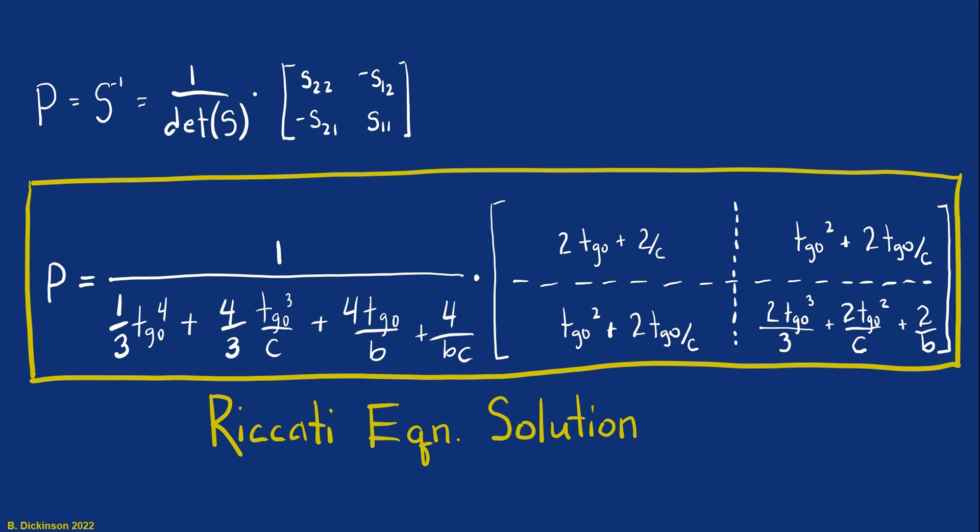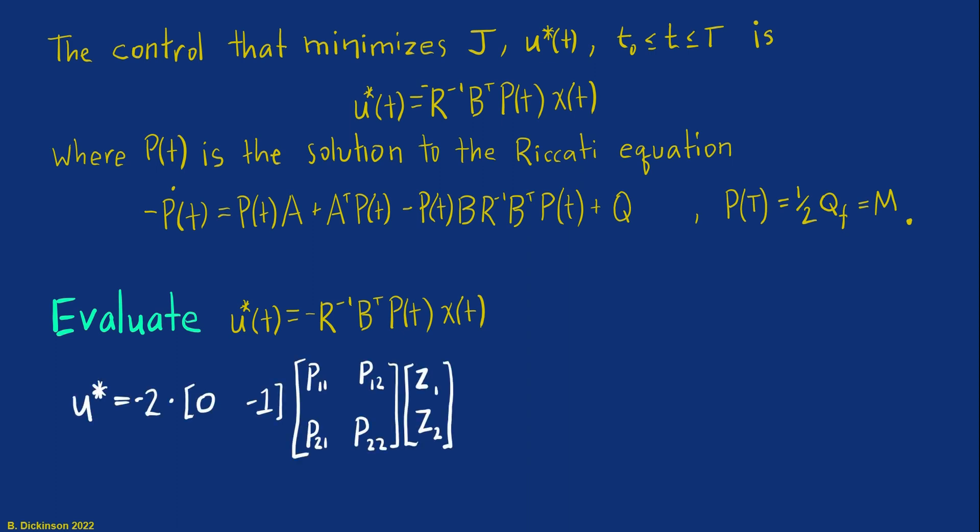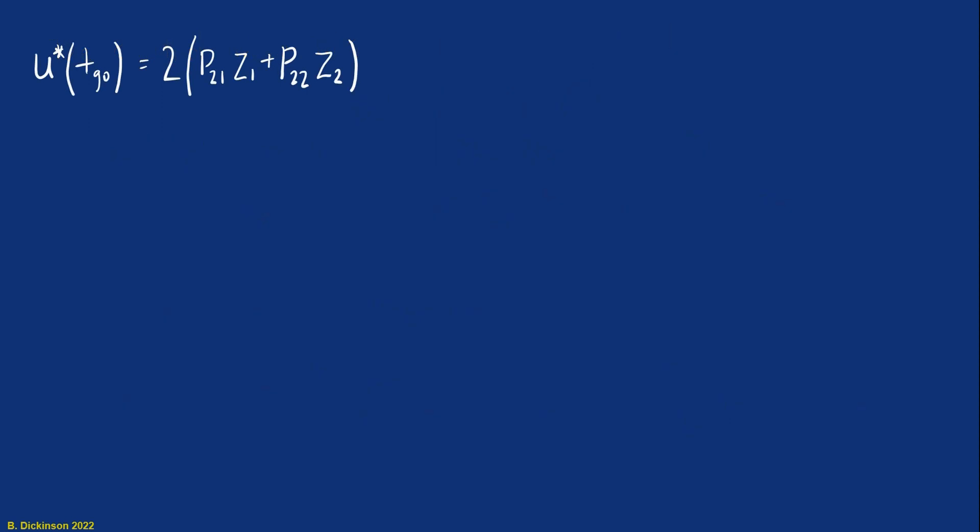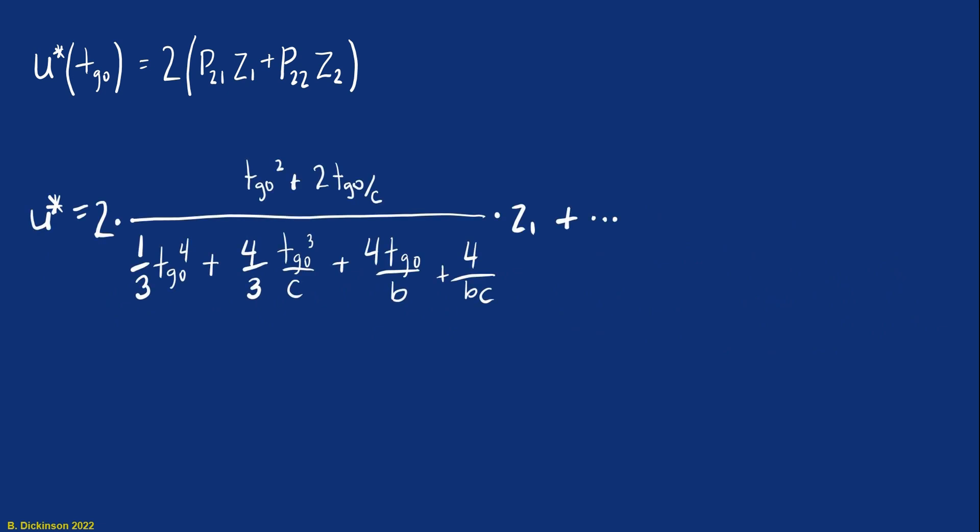But we still need to evaluate the optimal control. So going back to our solution that we outlined in section two, we need to evaluate U star is minus R inverse B transpose P times the state X. And so U star, notice it depends on P1 and P2. So we're really only pulling from the bottom row in our Riccati equation solution.